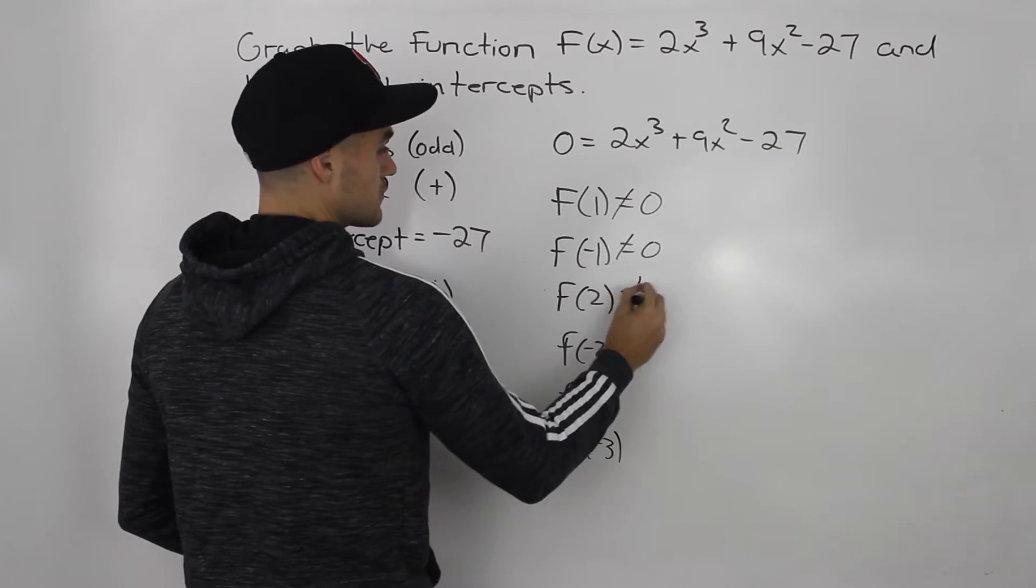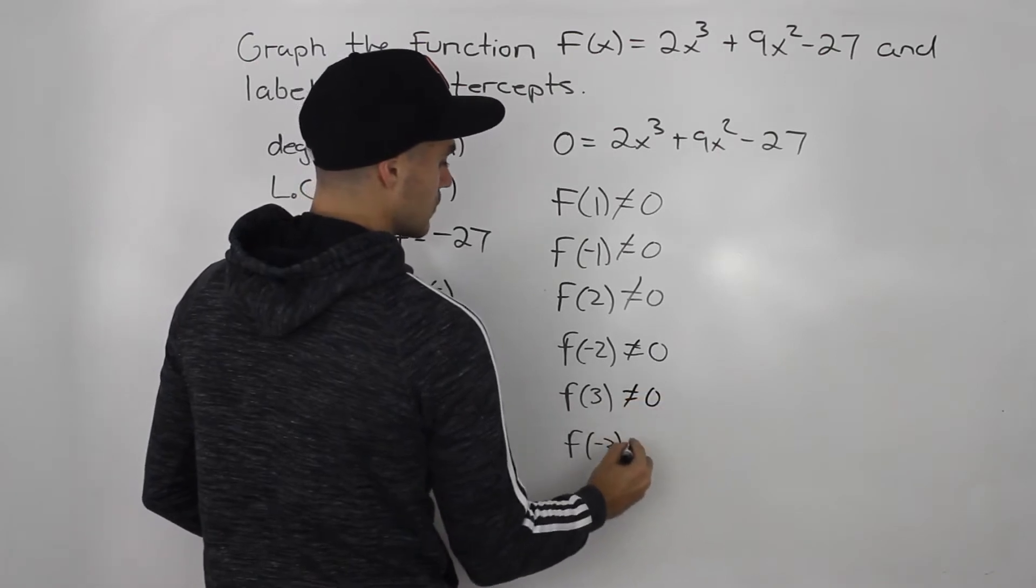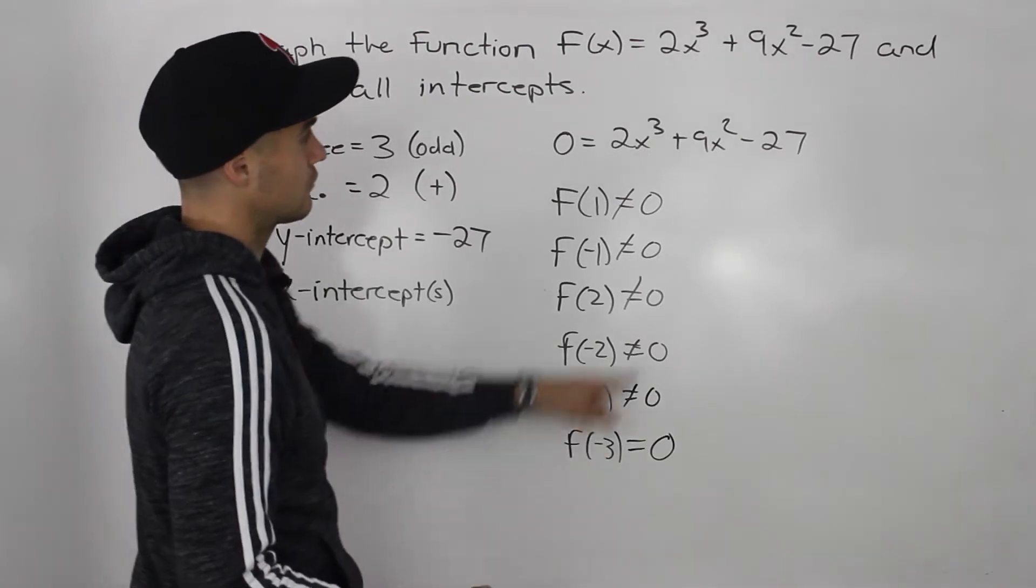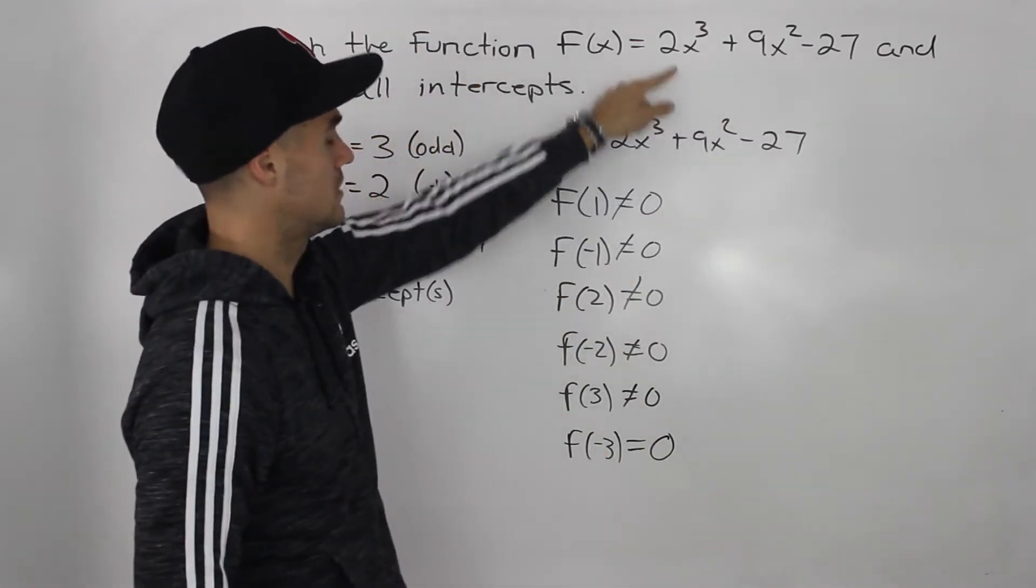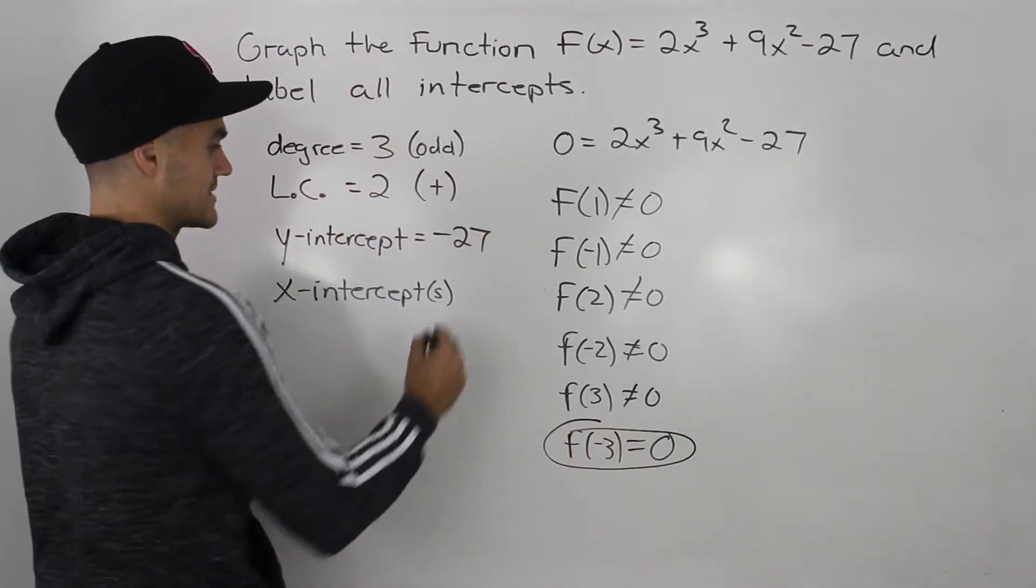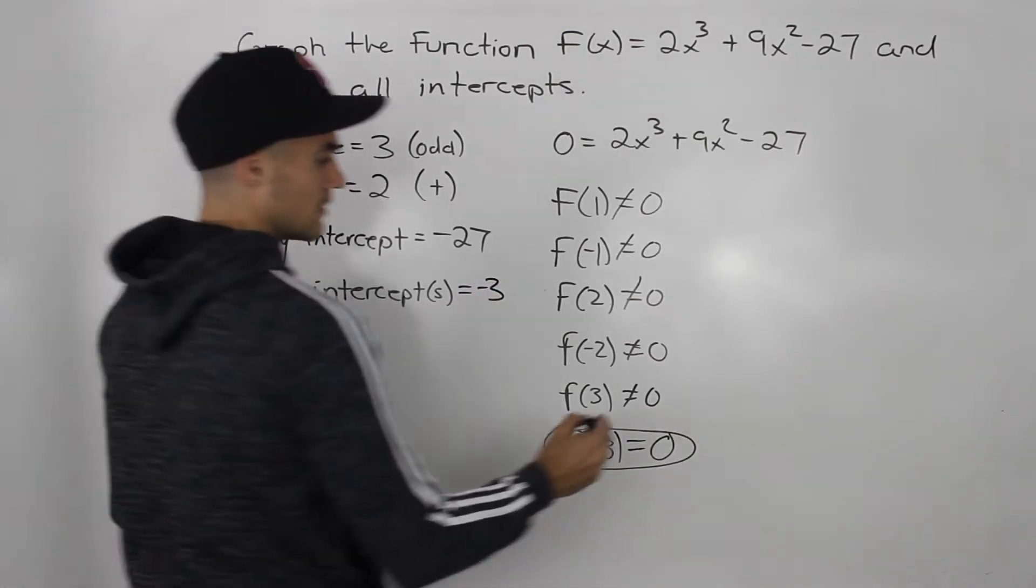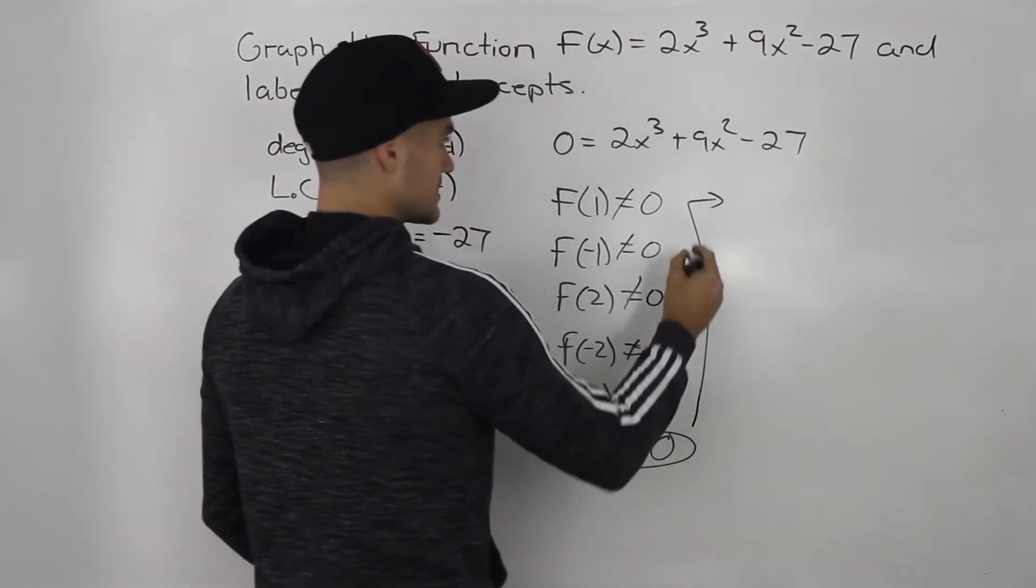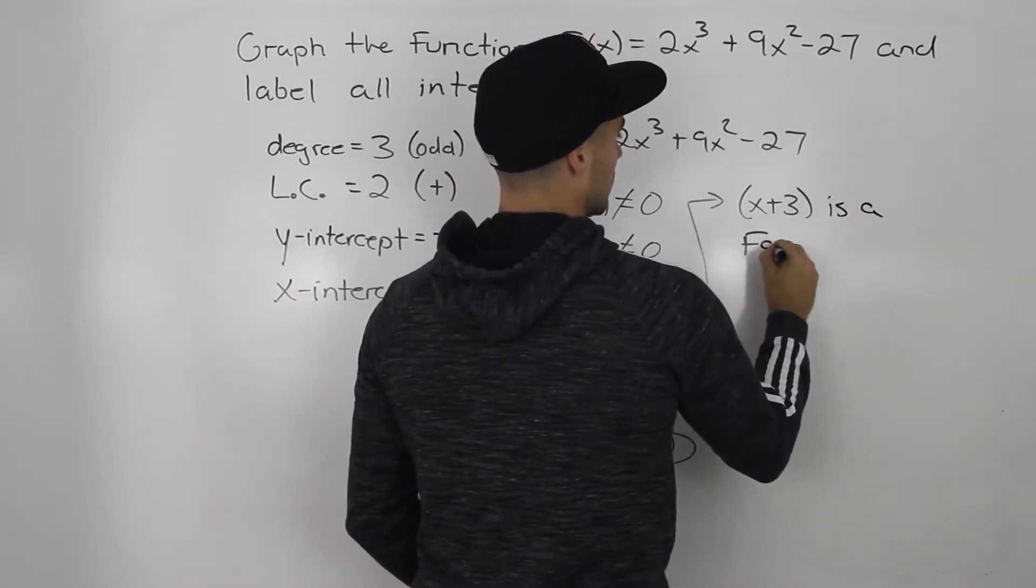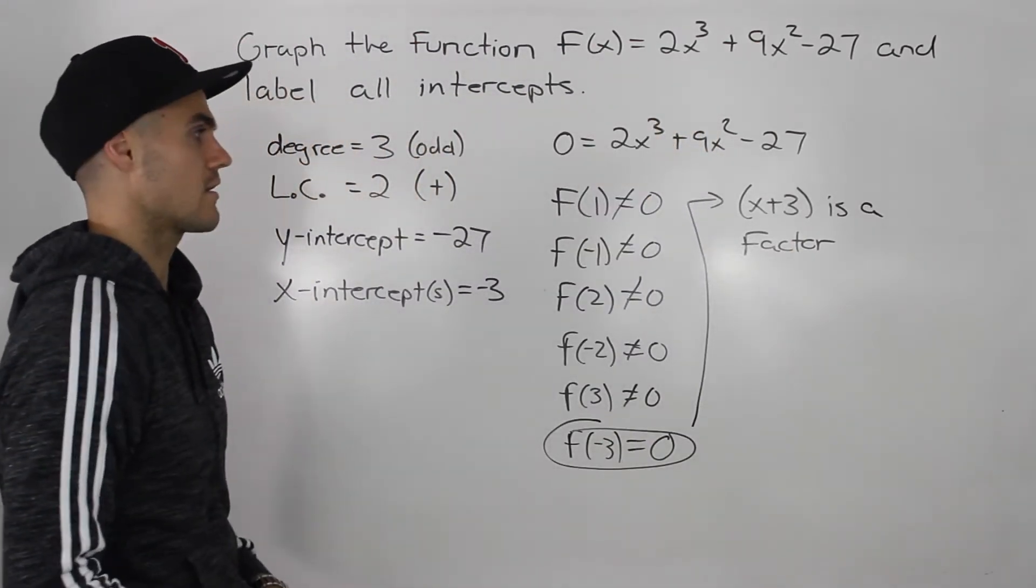If we plug in 2 for the x's, we wouldn't get 0. If we plug in negative 2, we won't get 0. If we plug in 3, we won't get 0. But if we plug in negative 3, we do get 0. So we know that this function has an x-intercept at negative 3 for sure. And since we know that, by the factor theorem, that means that x + 3 is a factor of that polynomial, of that cubic function.